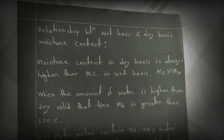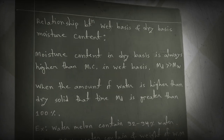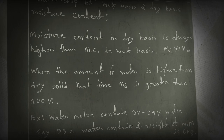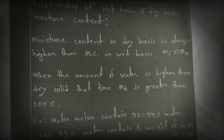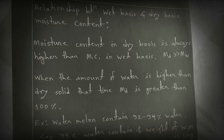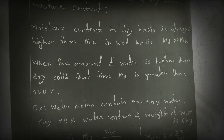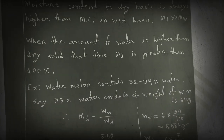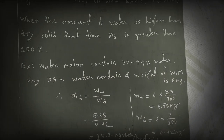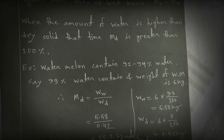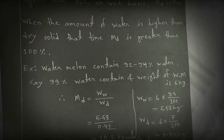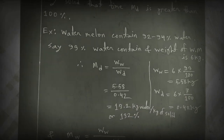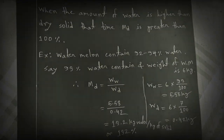Now for the relationship between weight basis and dry basis moisture content. Moisture content on dry basis is always higher than moisture content on weight basis — Md is always greater than Mw. When the amount of water is higher than the dry solid, the moisture content on dry basis Md can be greater than 100 percent.